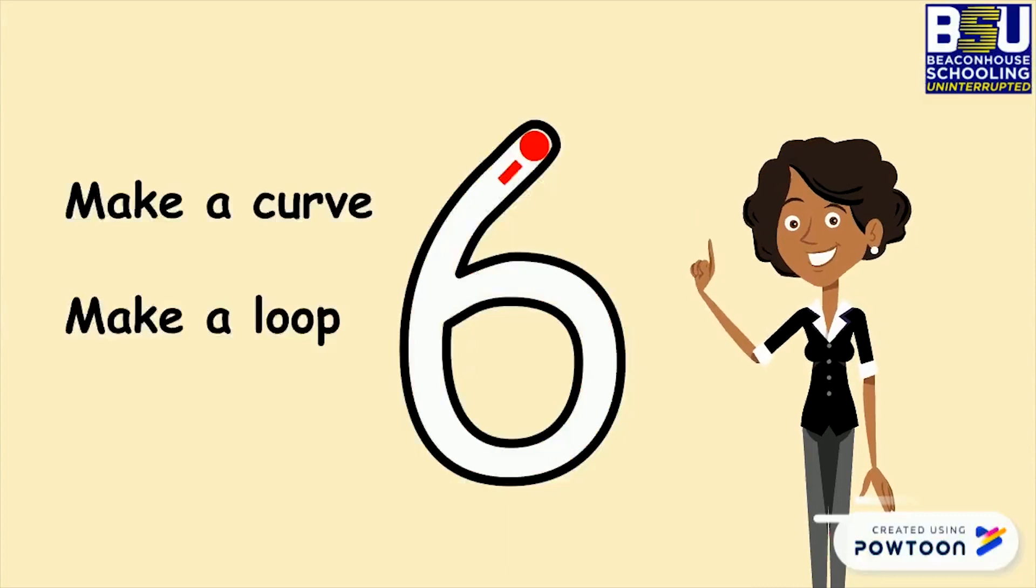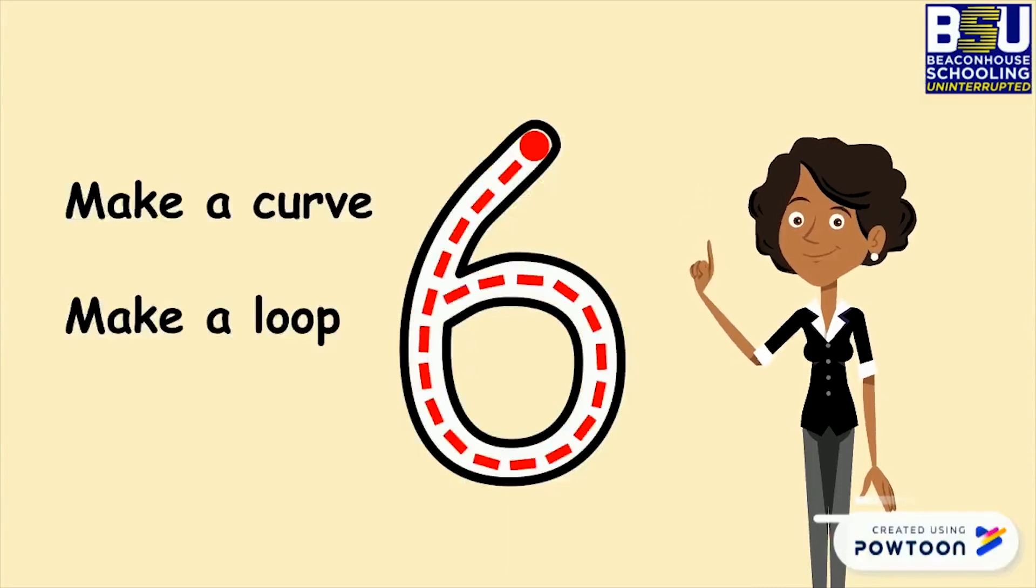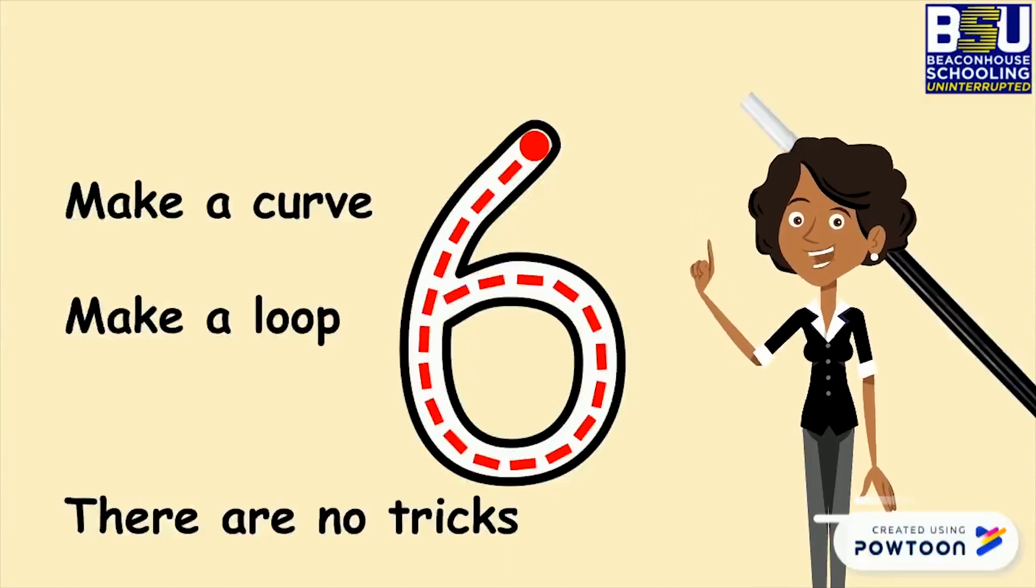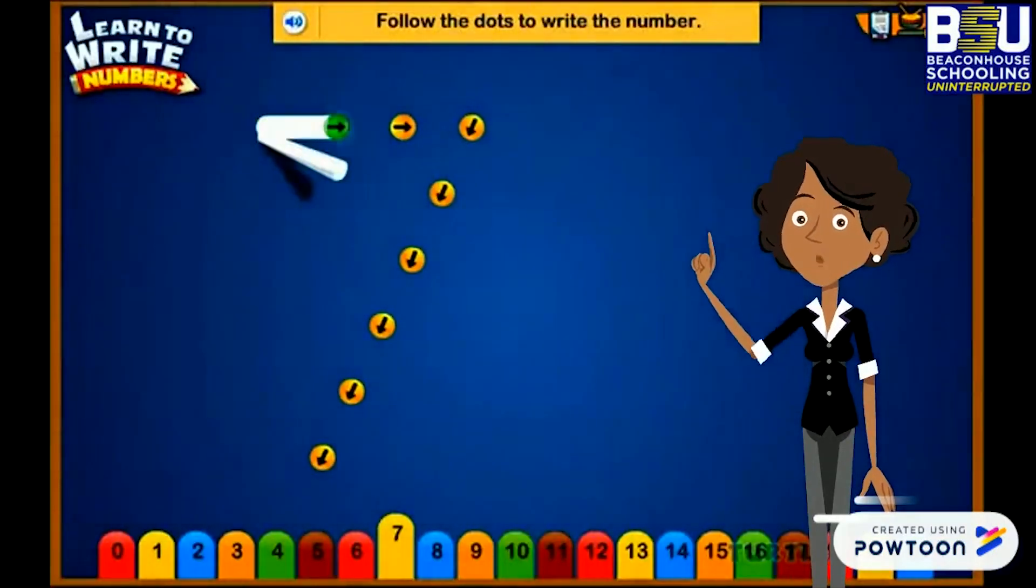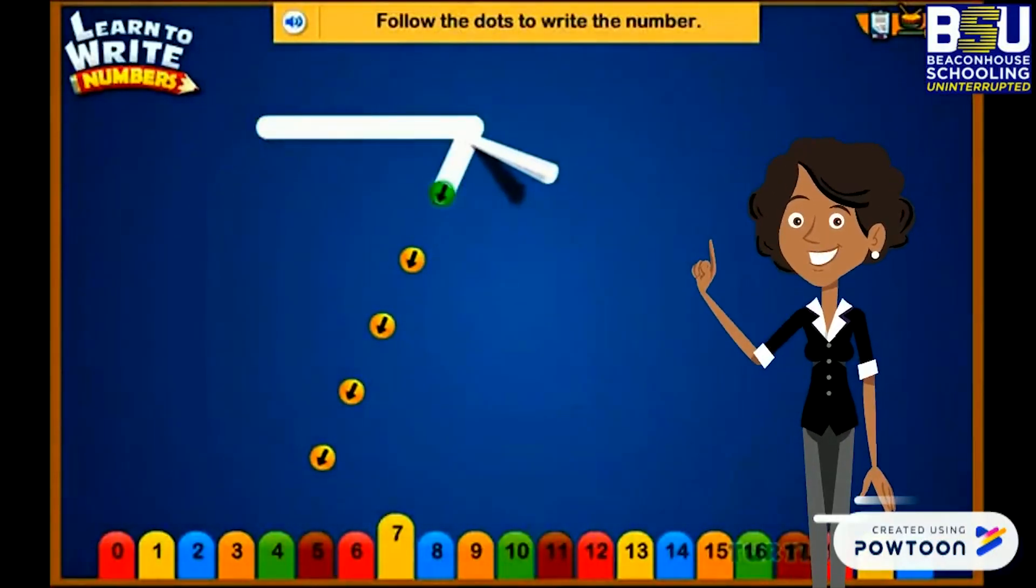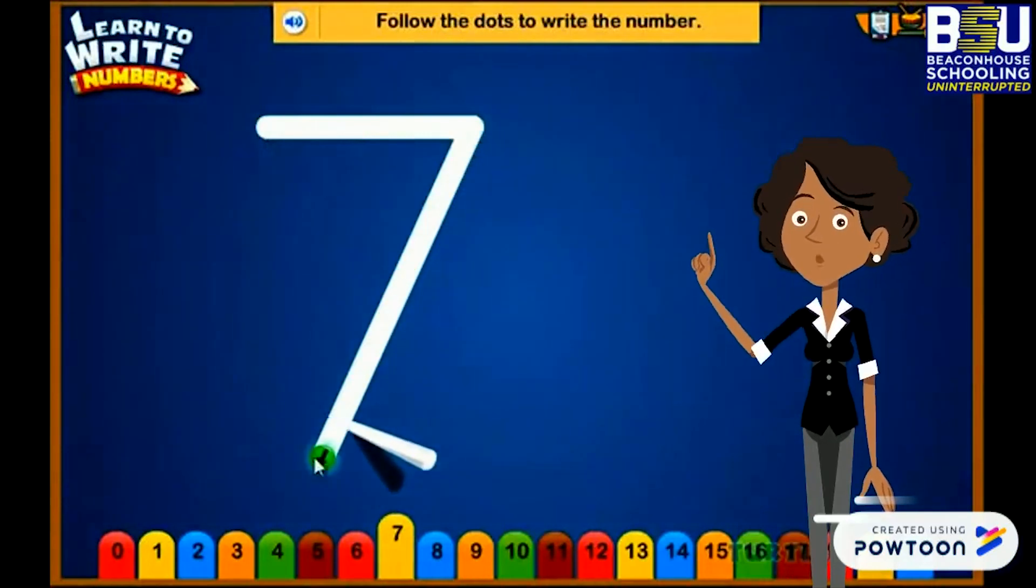Number 6. Make a curve and make a loop. Number 7. Start from the top. Make a horizontal line and then make a slanting line.